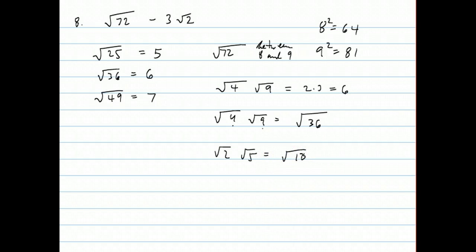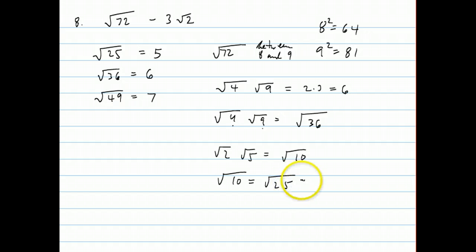You're allowed to do that. You can also do this in reverse. You can say the square root of 10 — since 10 is 2 times 5 — we can say the square root of 10 is the square root of 2 times the square root of 5. That's also allowed.